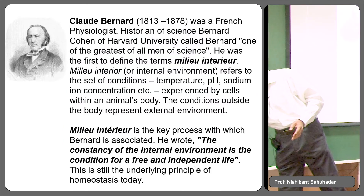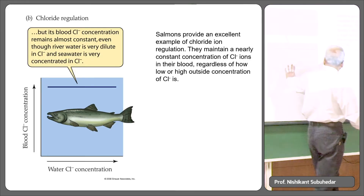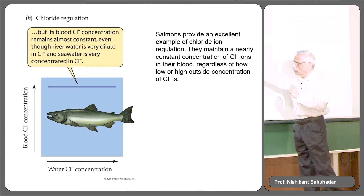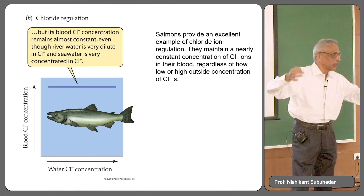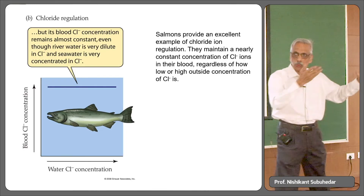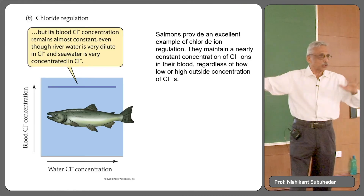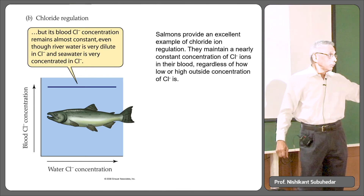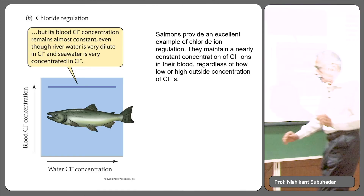Here is the slide: as the salmon goes from fresh water to sea water, researchers collected blood samples and measured chloride ion concentration at each stage. Look at that horizontal line — the chloride concentration is almost the same throughout. This means the animal is able to maintain its internal chloride concentration in spite of a massive, hundredfold change in the external environment.